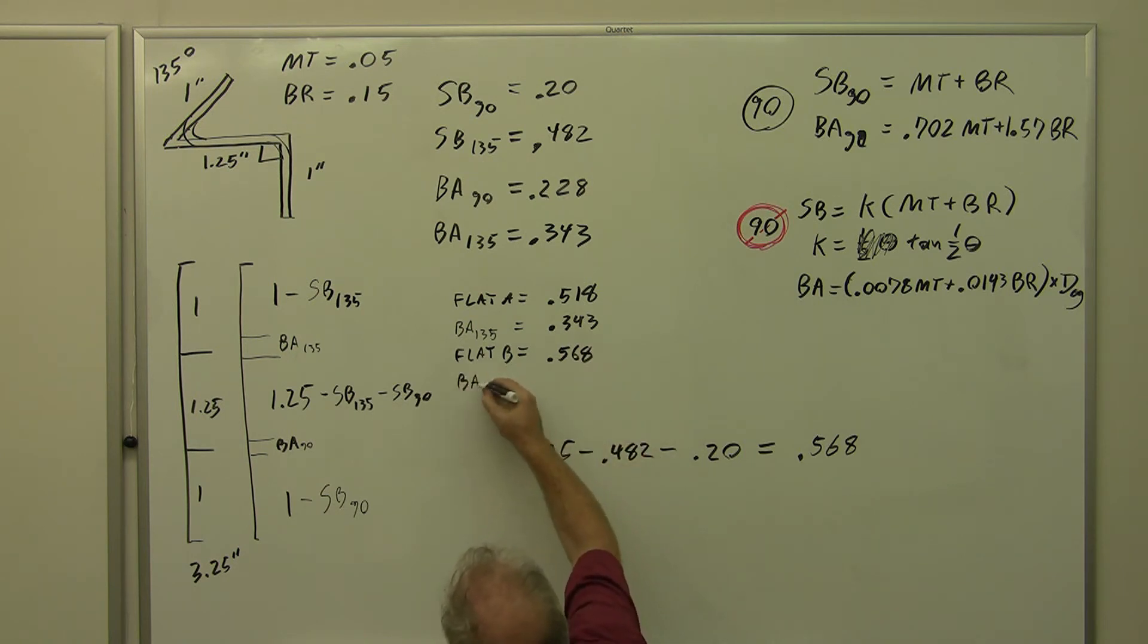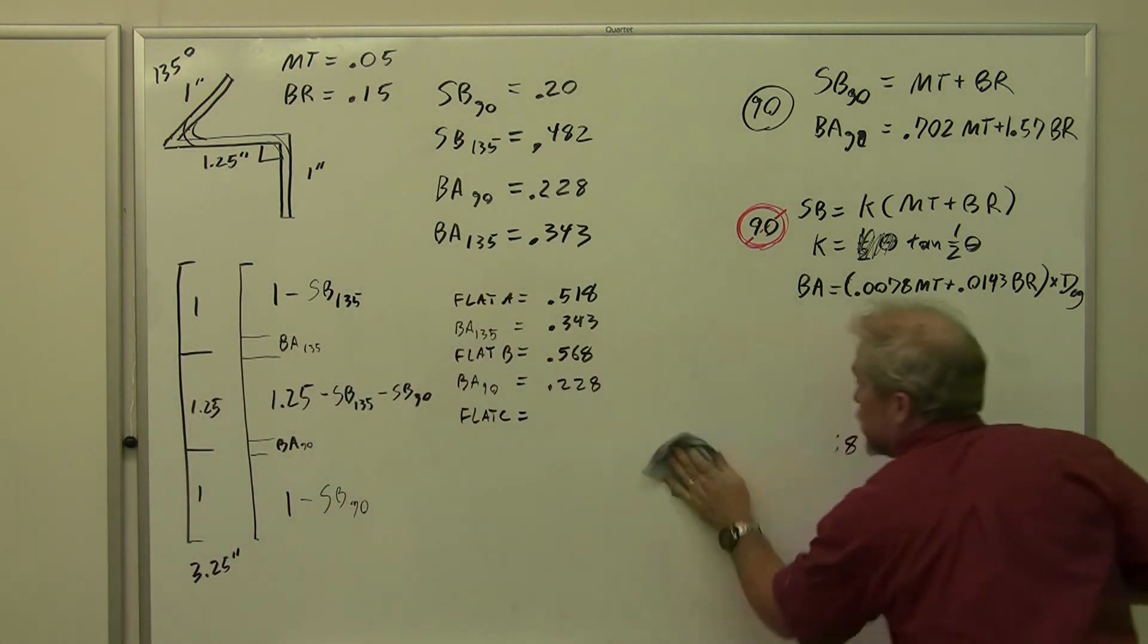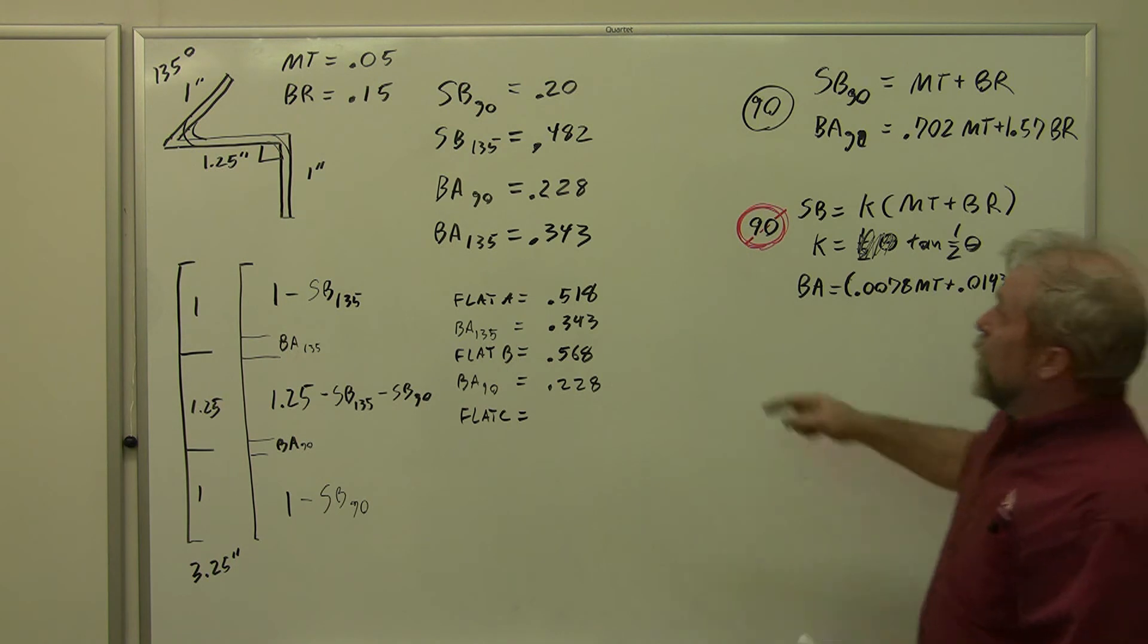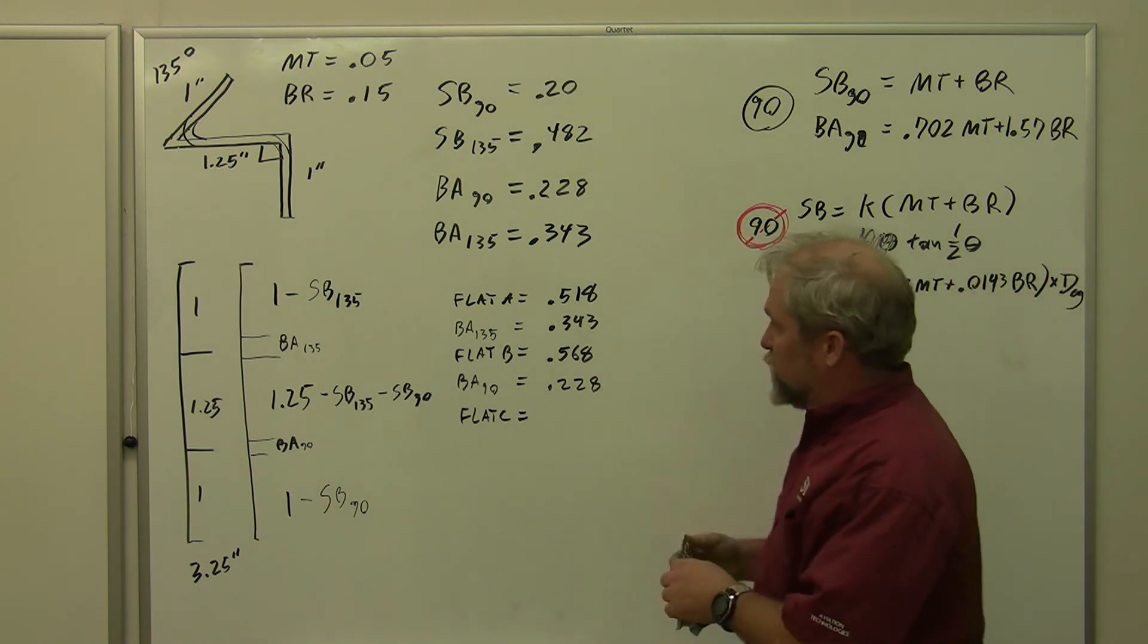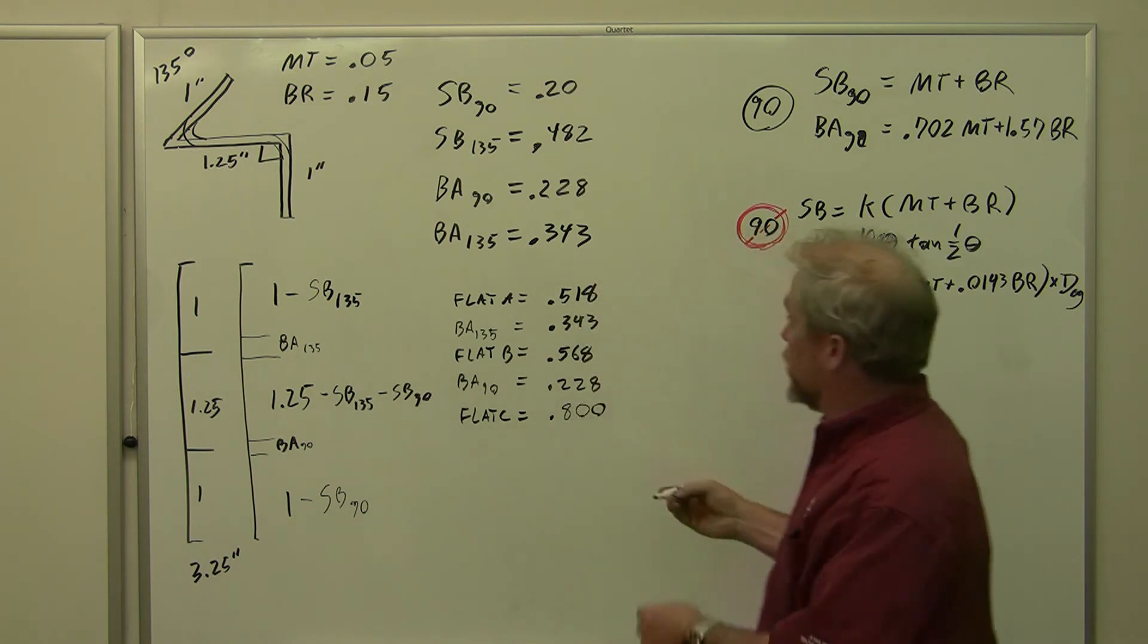Then we have bend allowance 90, which equals 0.228. And finally we have flat C. Flat C is 1 minus setback of 90, 1 minus 0.2, that is 0.800.